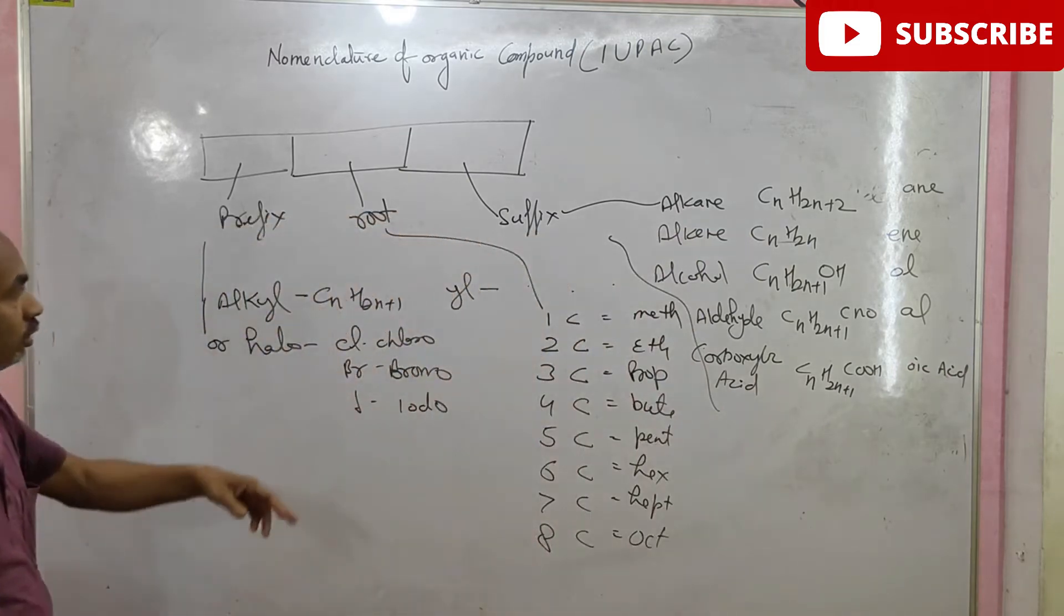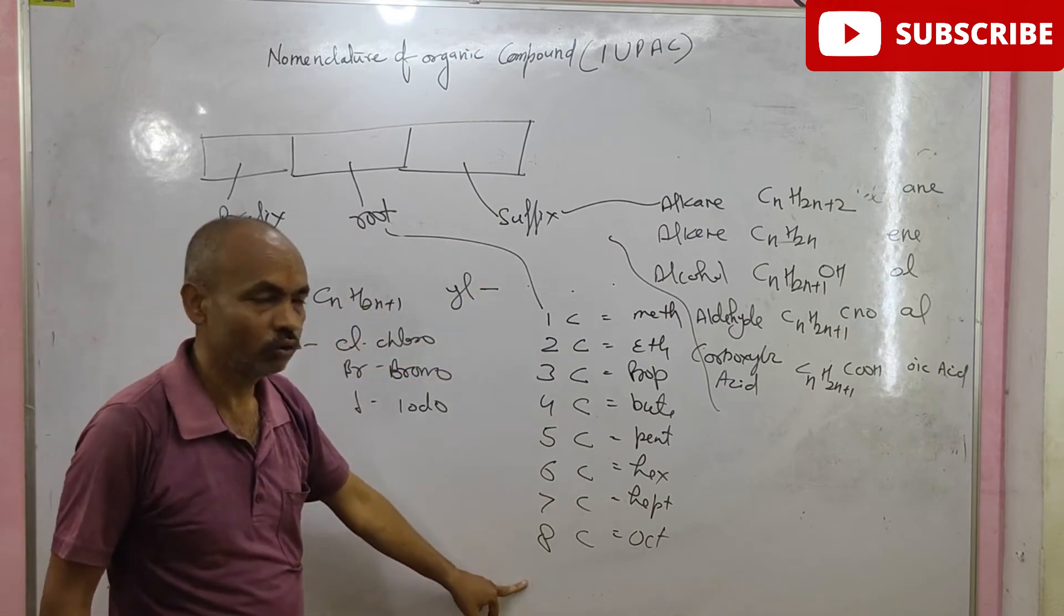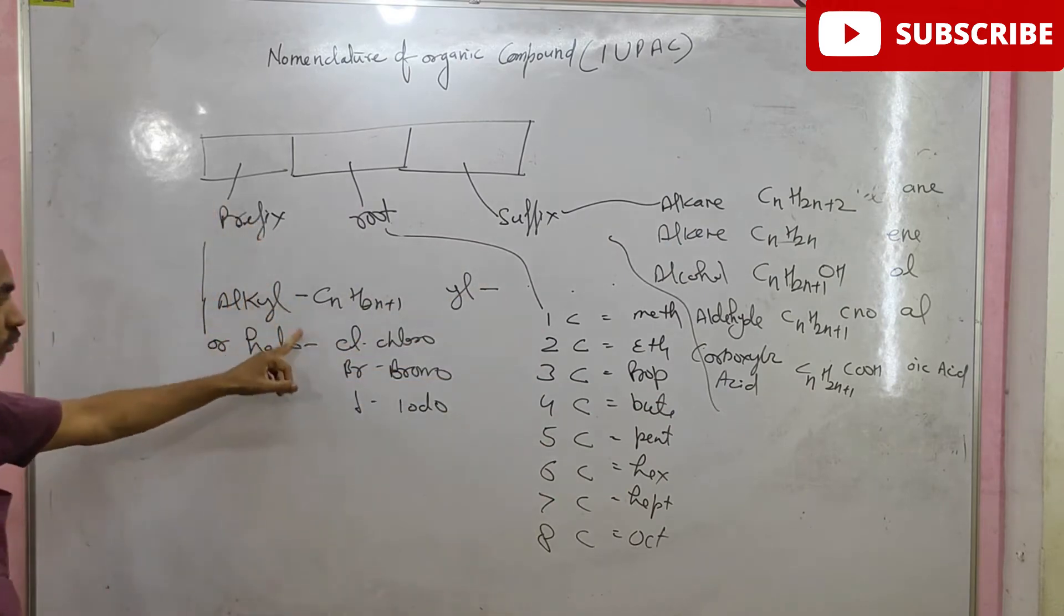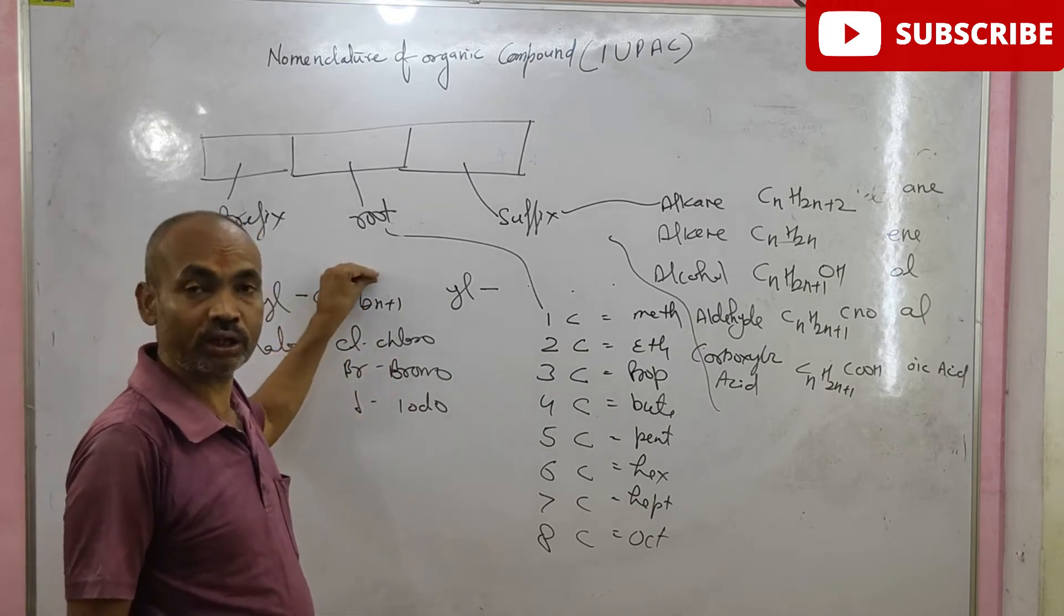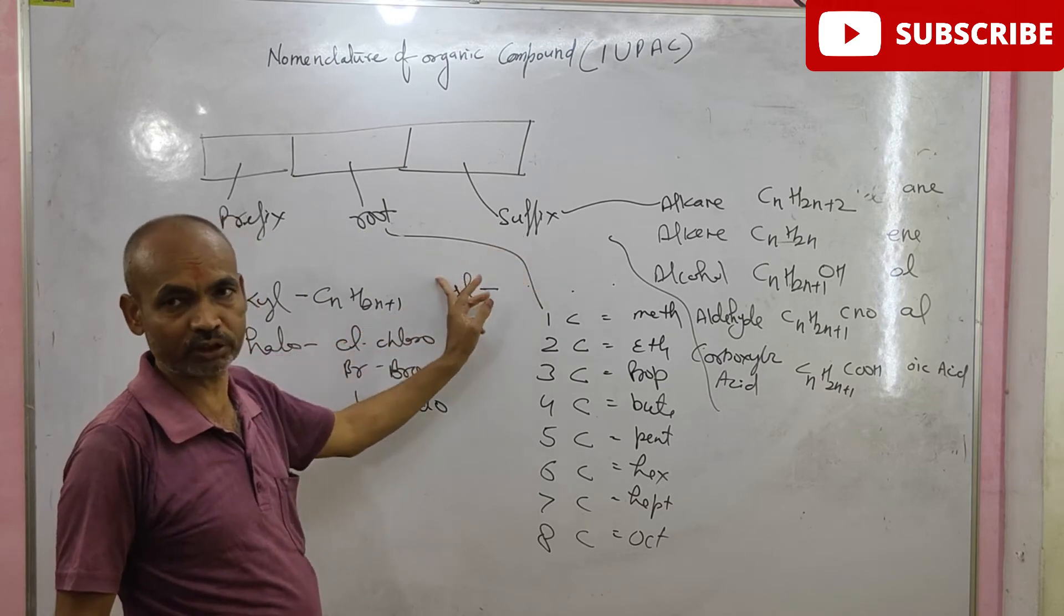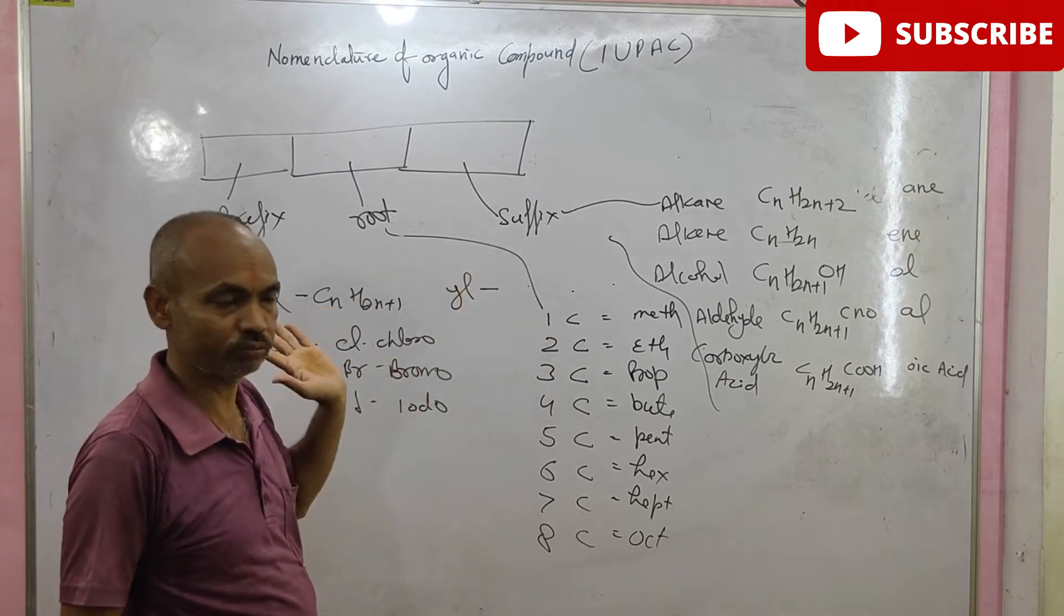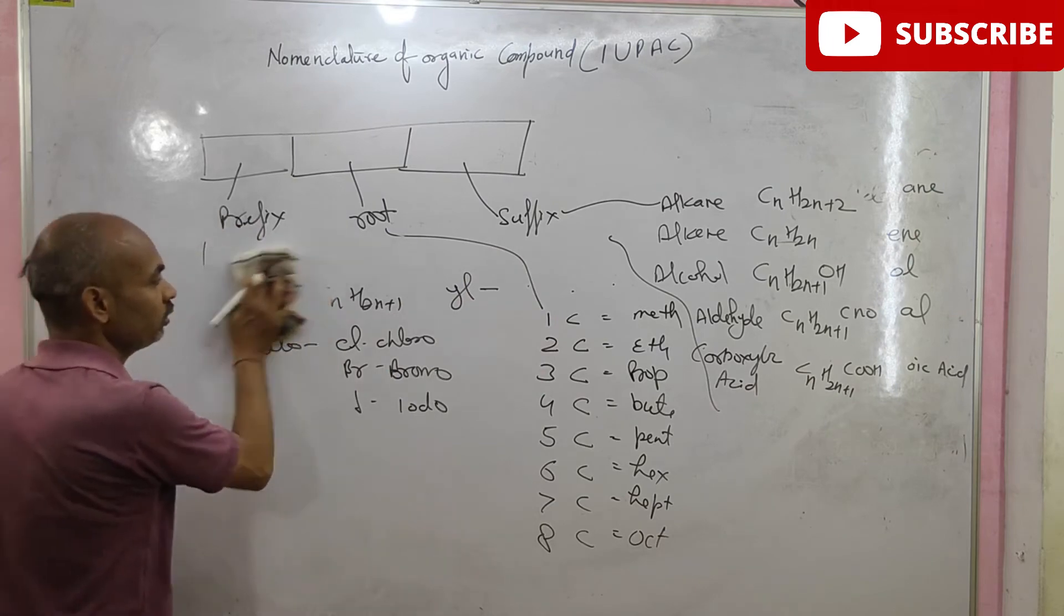These are suffix, these are root and these are prefix. Prefix may be present or not, but root and suffix are compulsory in organic compounds. Now, we will start naming some compounds.